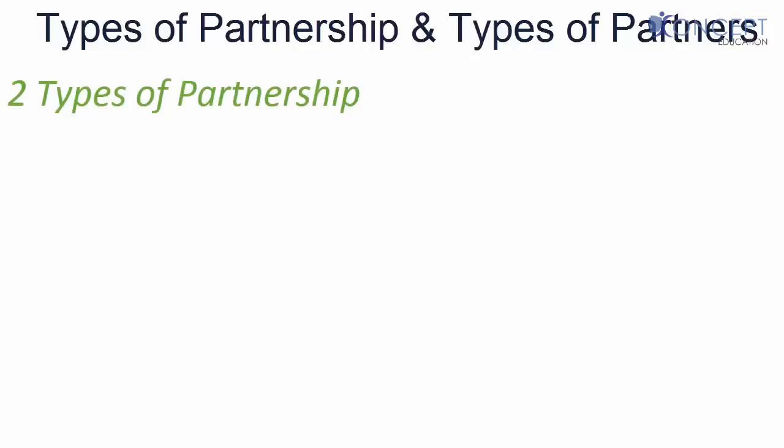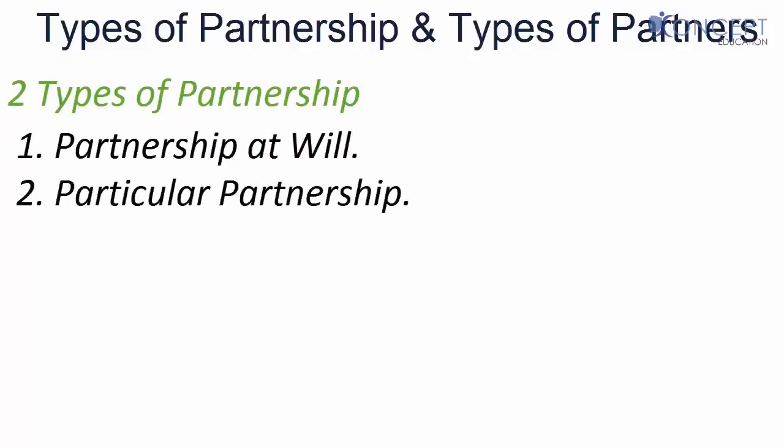Now let's look at the types of partnerships and the types of partners. There can be two types of partnership: partnership at will and particular partnership. Basically, they are divided into the time periods of a partnership.